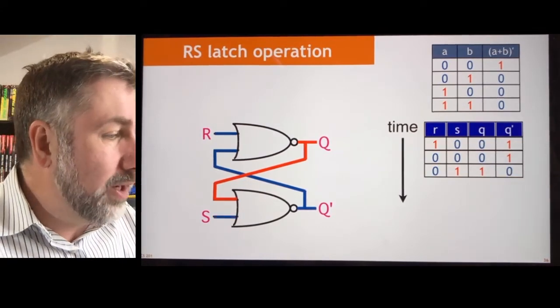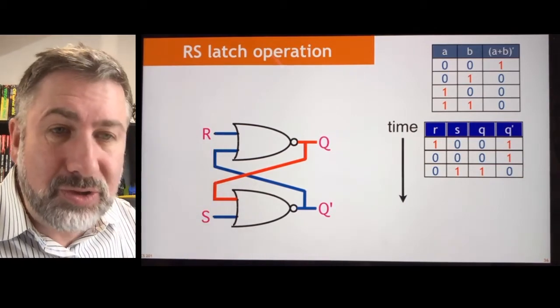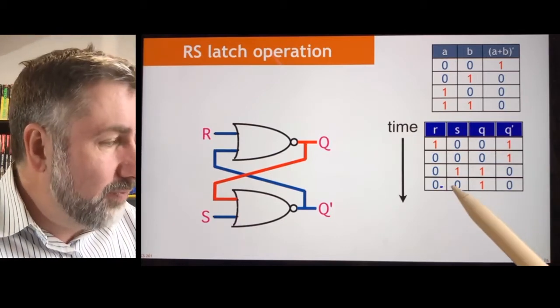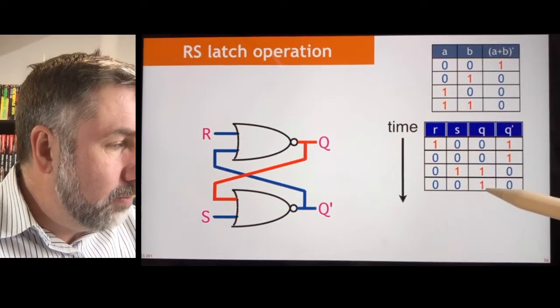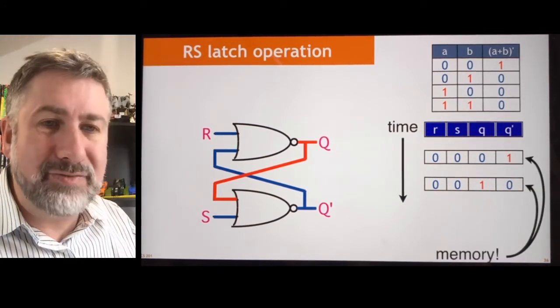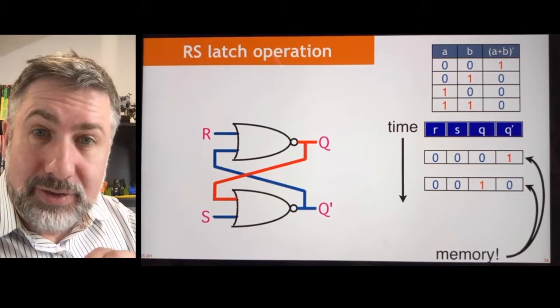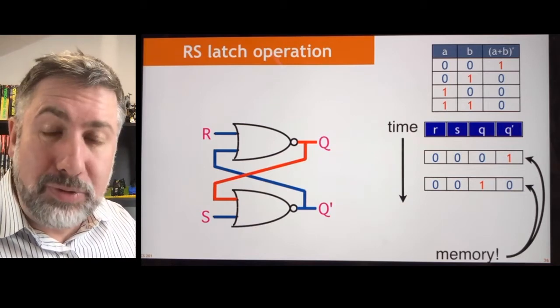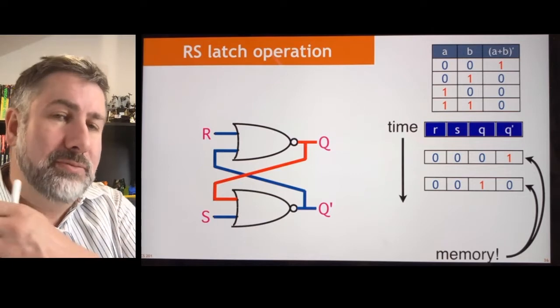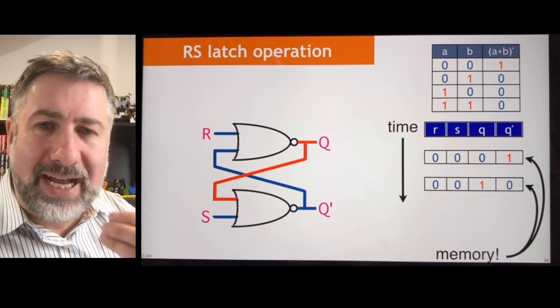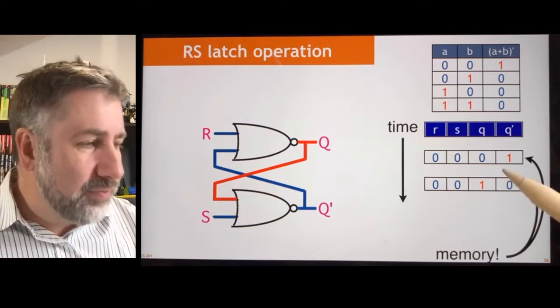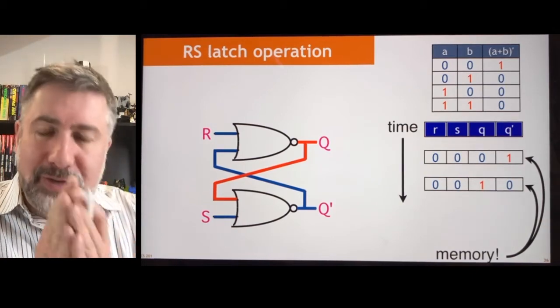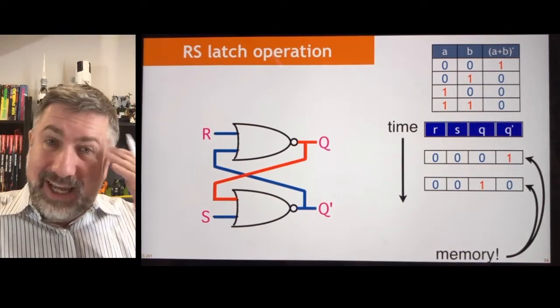And what happens then if after that I set them both to 0? Well, as we said before, if they're both set to 0, whatever value it has will be maintained. And so if they're both 0, then now my output is 1. And this is the essence of memory. The same input gives you different outputs. If you set R and S both to 0, the only way to tell what the output is will be to know what it was before. So this now has some aspect of time. It knows what it was before and the value of the output depends on what it was before. So this is very exciting. This is the fundamental unit of storage for all devices. And it's really cool to think about.